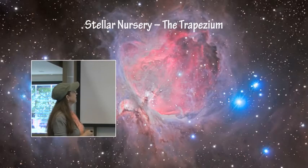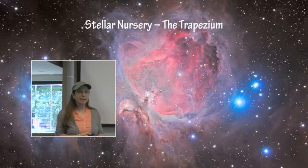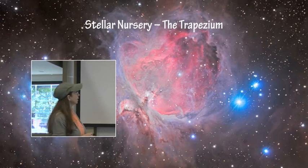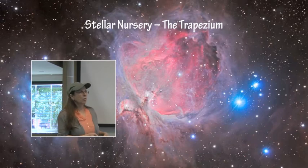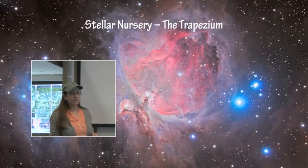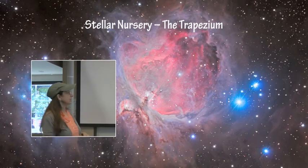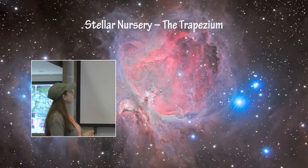There is a stellar nursery in M42, the Orion Nebula, called the Trapezium, where both Hubble and Chandra have done some really nice observations to show these stars that are flaring, just like the T Tauri stars.